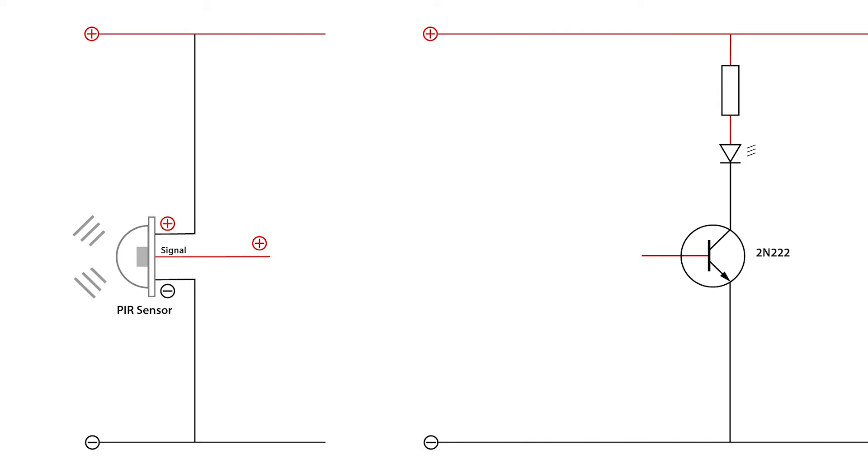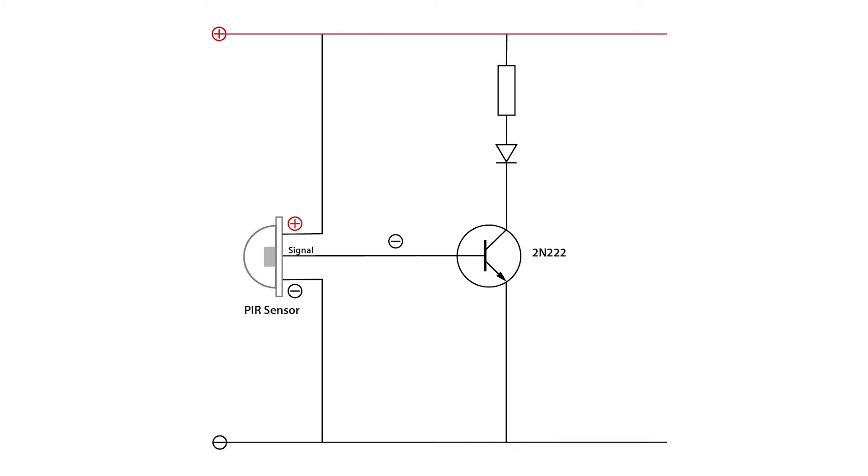If we combine this circuit with the PIR sensor setup we've just looked at then the signal pin of the sensor will switch on the transistor when it's triggered by infrared and then the light will come on.